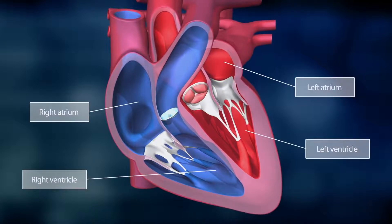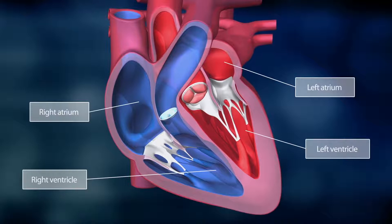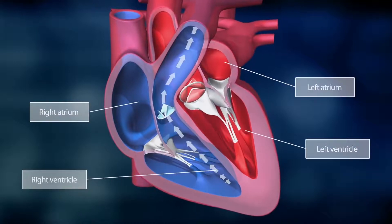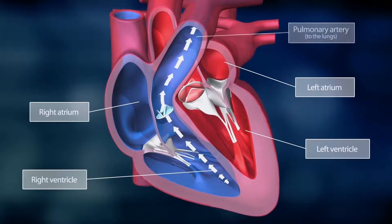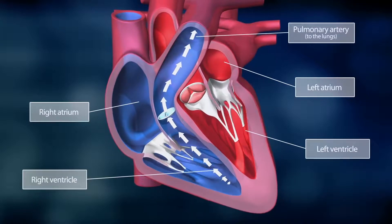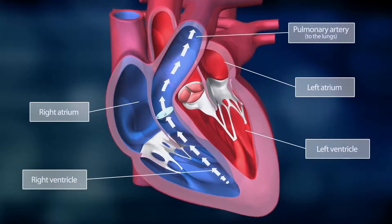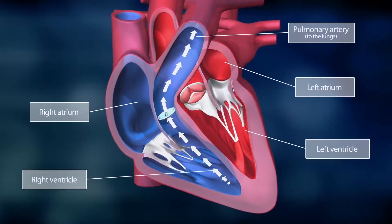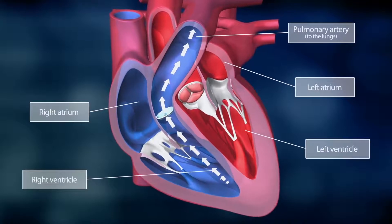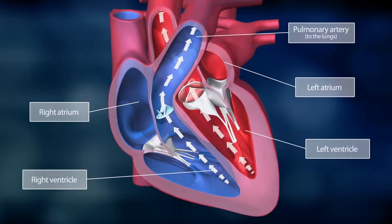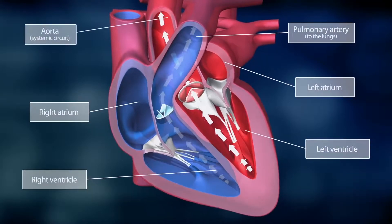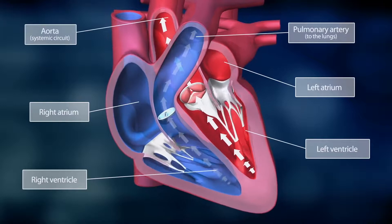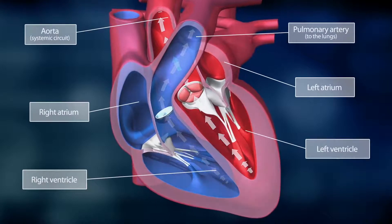The right and left side of the heart work hand in hand. The right side of the heart pumps blood through the pulmonary artery into the lung, where it is enriched with oxygen. The left side pumps blood to all other parts of the body through the aorta and the systemic circuit.